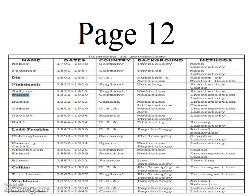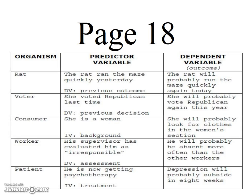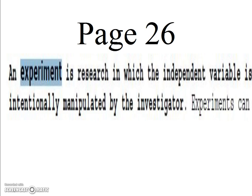Look at the chart on page 12 and focus on those that we've spent a lot of time talking about, such as Wilhelm Wundt, who gave us the first psychology laboratory. In Unit 2, students want to learn more about predictor and criterion variables. That's covered on page 18 of the book, and many examples are given there. What I think students need to know about Unit 2 is the definition of an experiment: research in which an independent variable is intentionally manipulated by the investigator.